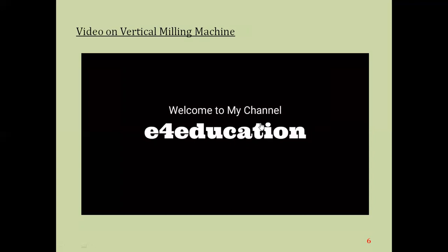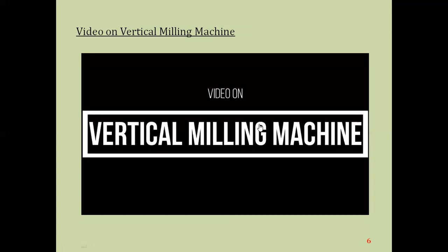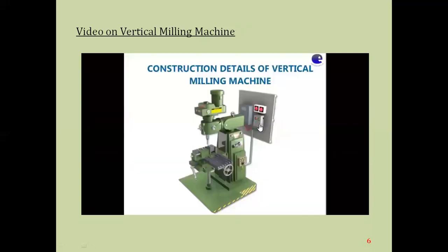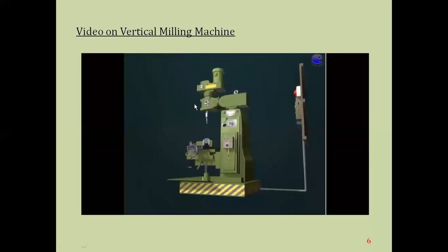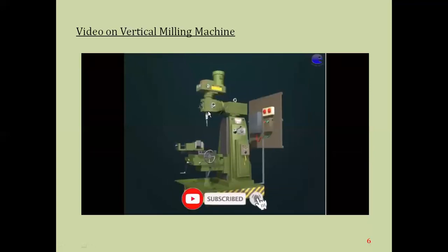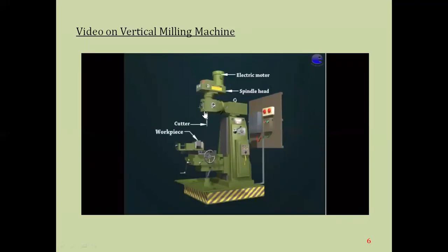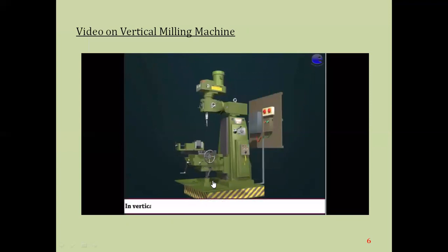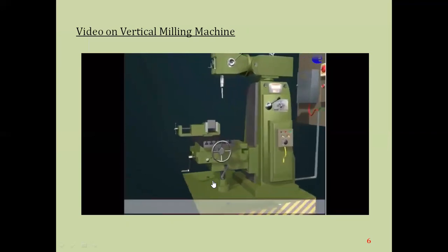Similarly, we have the vertical milling machine. All the parts are the same except the position of the spindle is changed — the spindle comes in a forward direction with respect to the cutter. The electric motor, spindle, and cutter are all mounted in the vertical axis. The workpiece, column, saddle, knee elevating screw, and handle are also present.